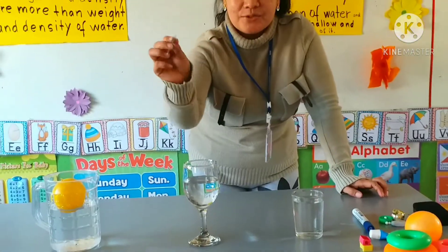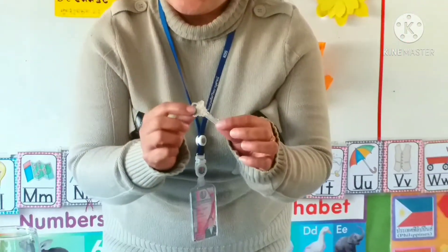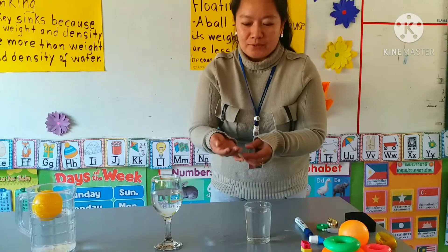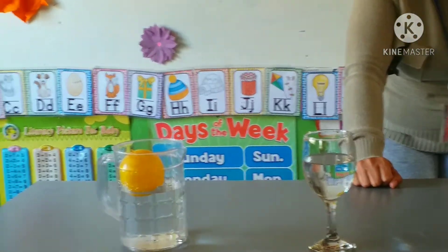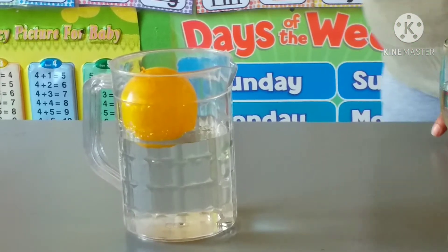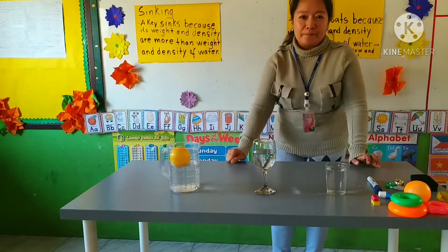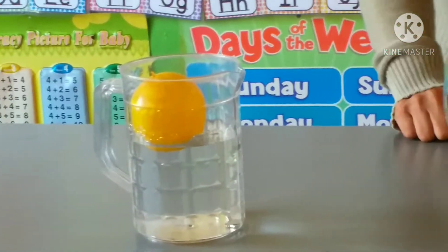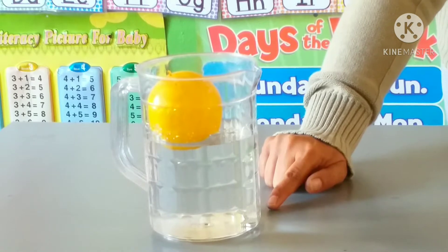How about the key? Can you see this? This is a key. Let us see if this key will sink or float. The key is a little bit heavy compared to the bowl. We will put the key in the water... oh, it goes down. Why is the key sinking? Because its weight and density are more than the weight and density of water, and there is no air helping to make the key float.